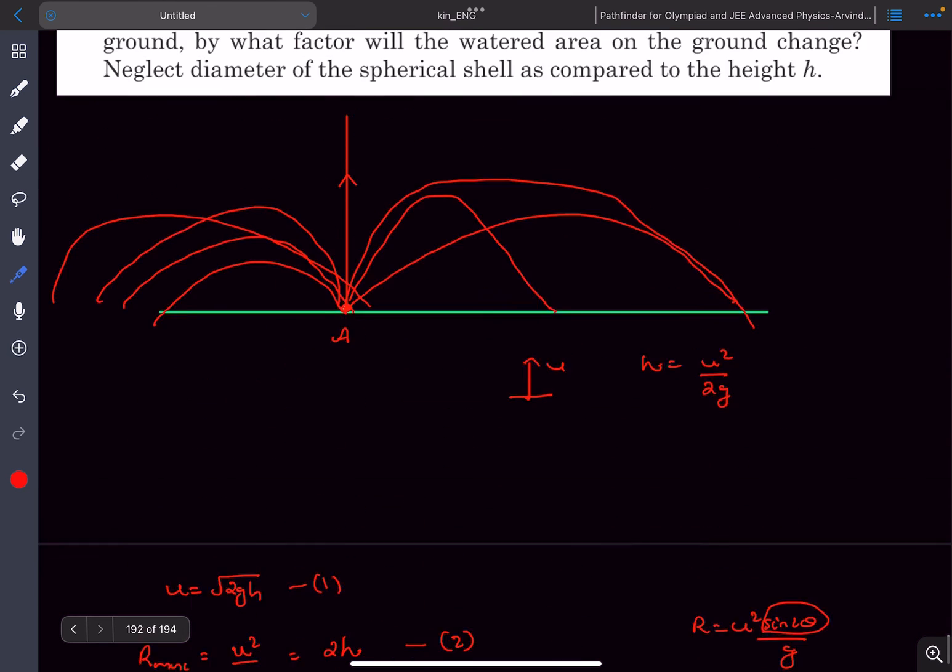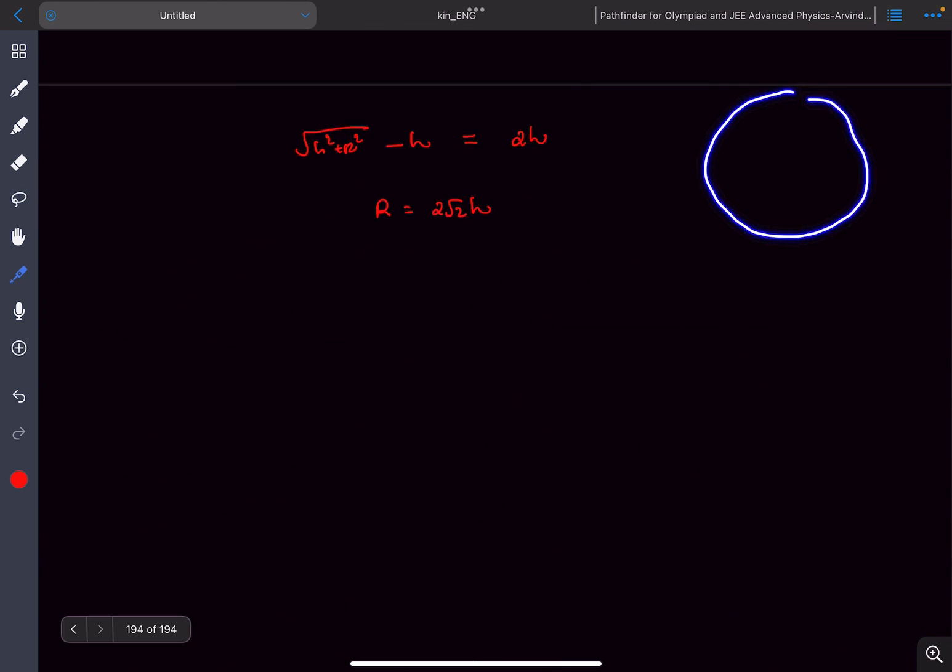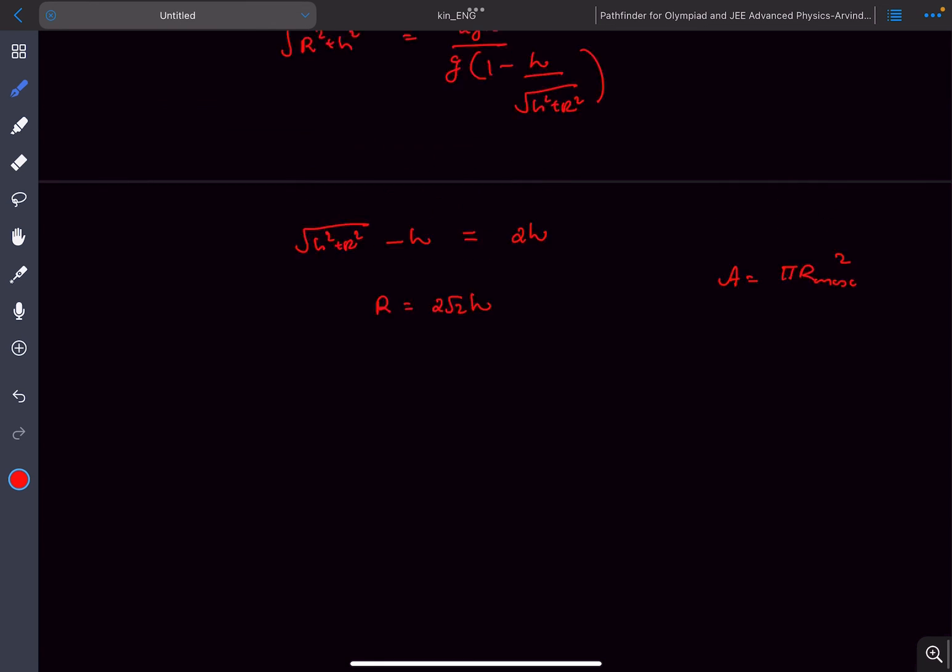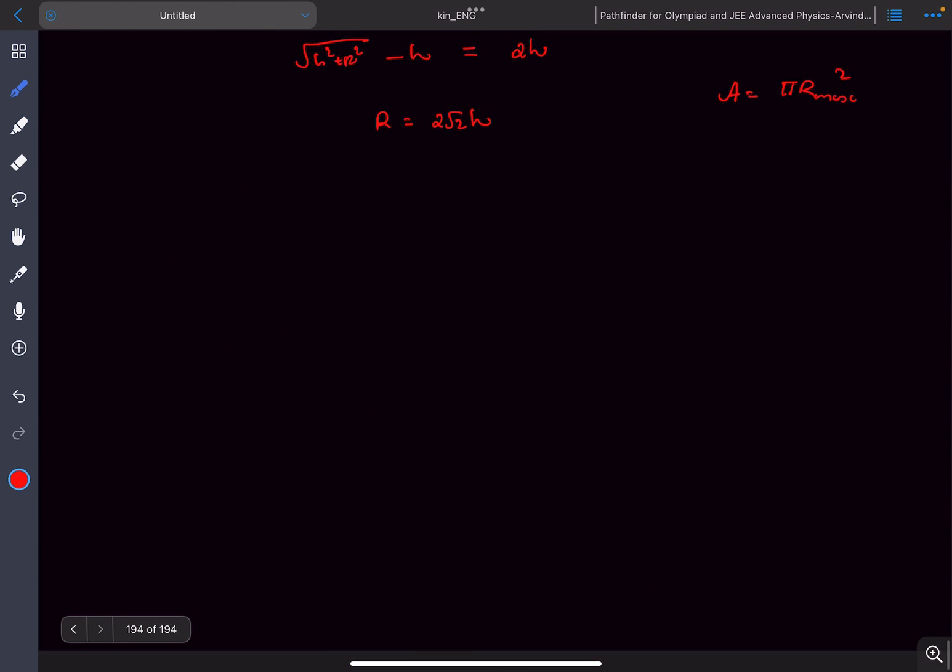Now the area - the question asked us by what factor will the watered area change. The maximum watered area will depend upon the range of this projectile r_max, so that area will be π times r_max².